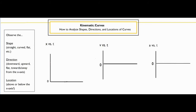When we take a look at the shape, we're going to look at if it's straight, curved, or flat. As far as the direction goes, whether it's upward or downward, flat, or in some cases towards or away from the x-axis. And then also the location — where is your line? Is it above or below the x-axis?